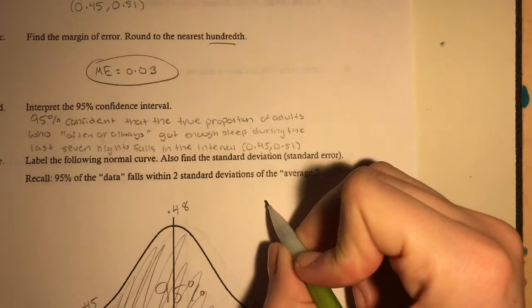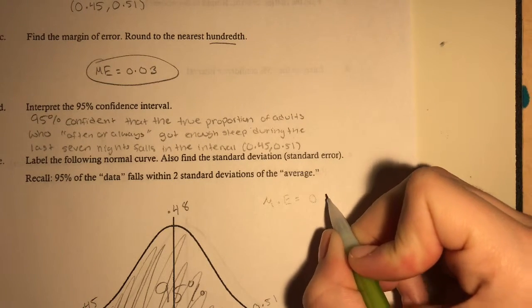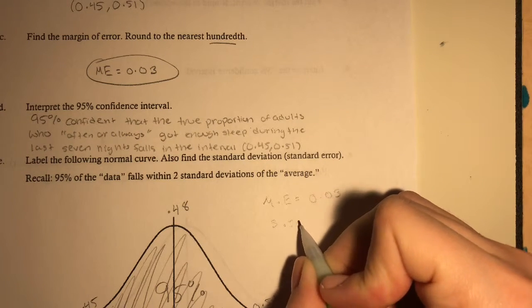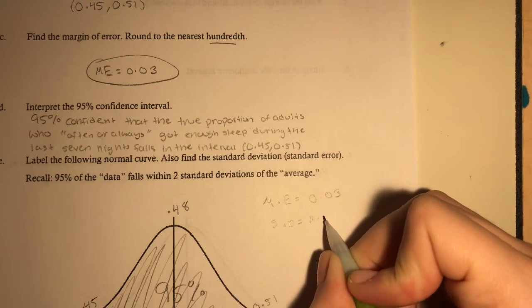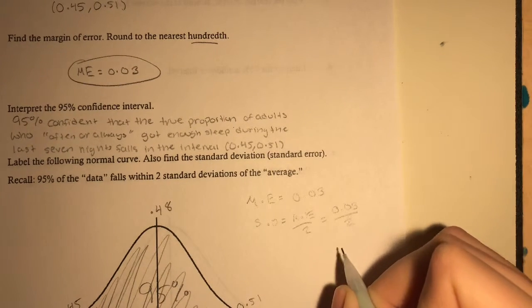Now we need to figure out what our first standard deviation is. So if we know that ME equals 0.03, or margin of error, the standard deviation is going to equal the margin of error divided by 2.